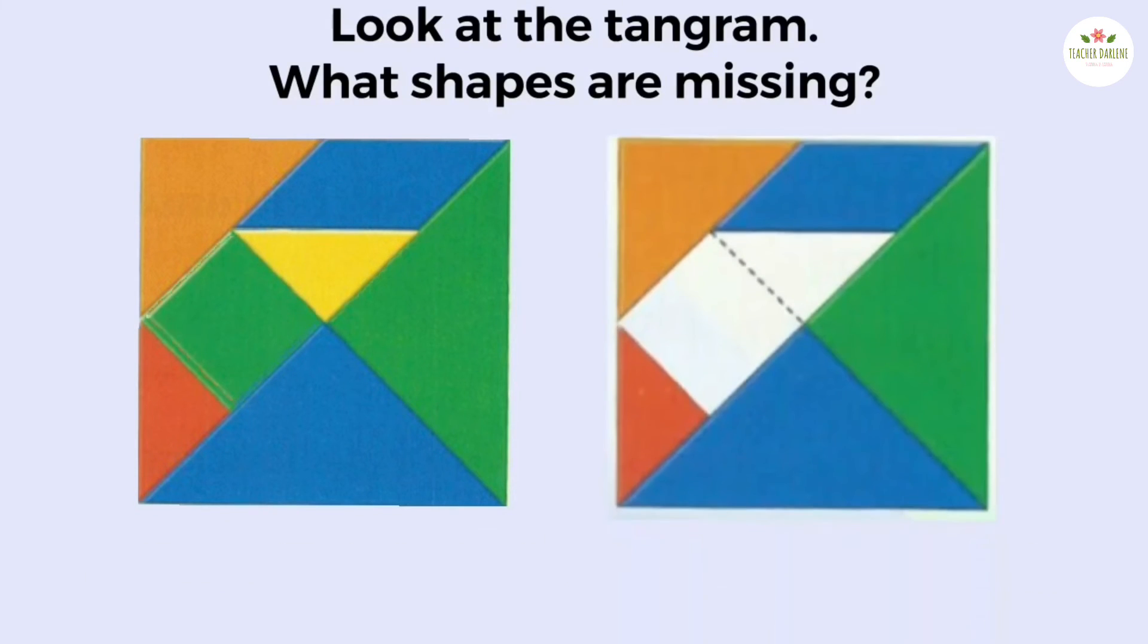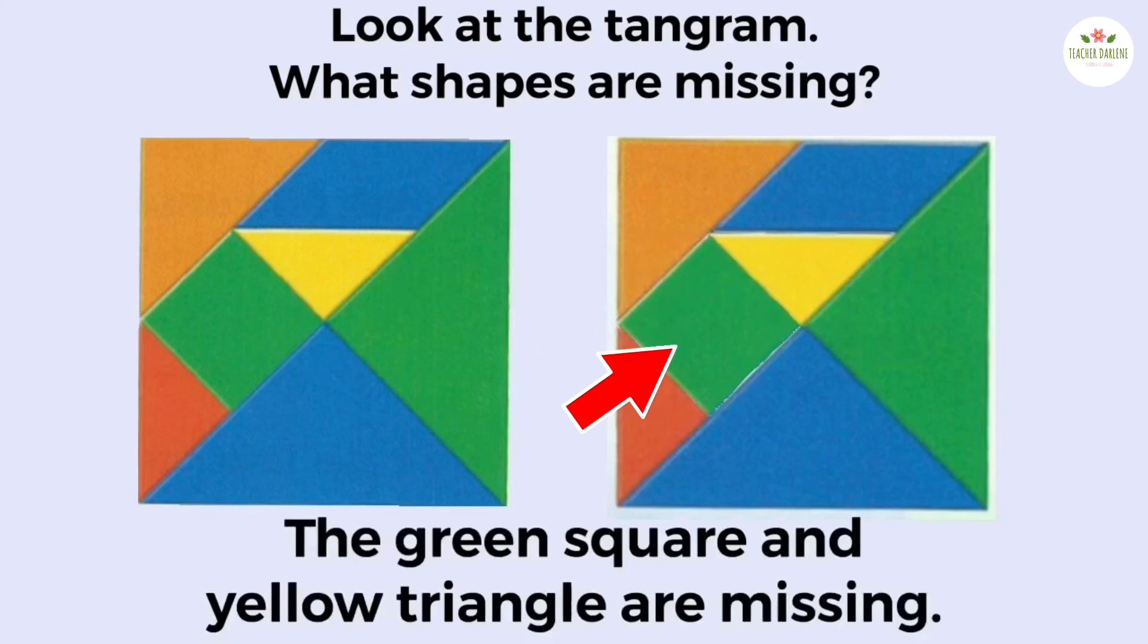Look at the tangram. What shapes are missing? The green square and yellow triangle are missing.